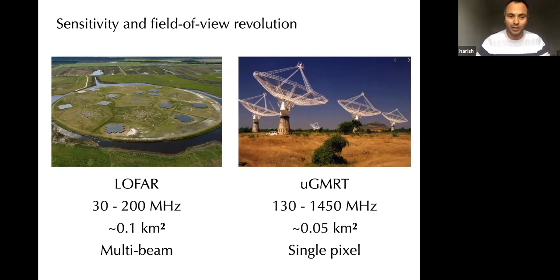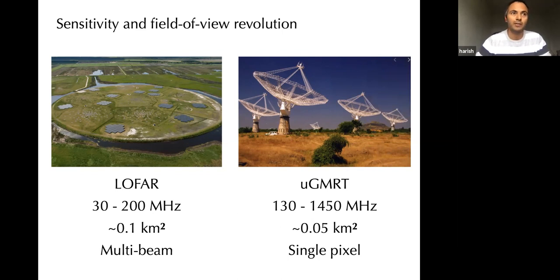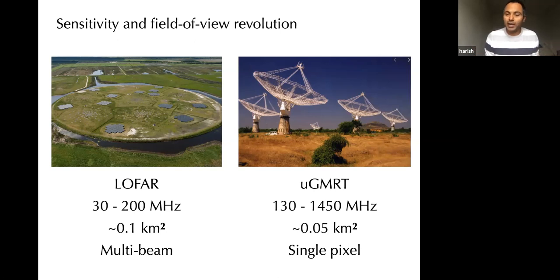The telescope I'll mostly focus on is LOFAR. It observes at very low frequencies — about 30 to 200 MHz — which is perfect, because all the signals I've been talking about appear at low frequencies. These are comparable to FM broadcast frequencies, which happen around 100 MHz. The total collecting area of LOFAR is about 0.1 square kilometers — enormous — composed of tens of thousands of simple dipole antennas spread across the Netherlands and Europe, and hopefully soon in Bulgaria.